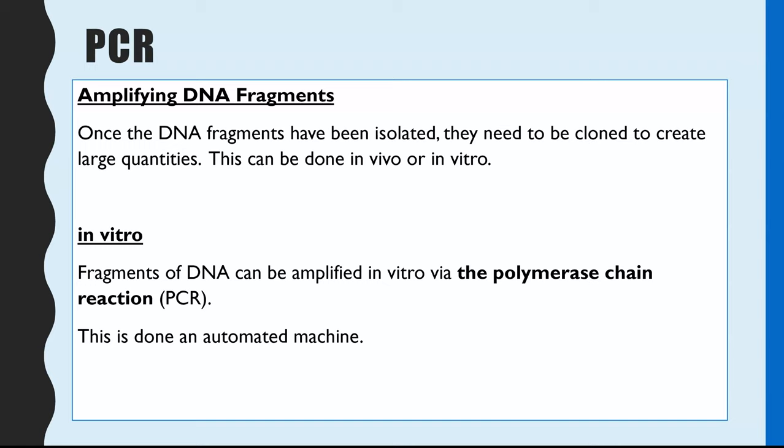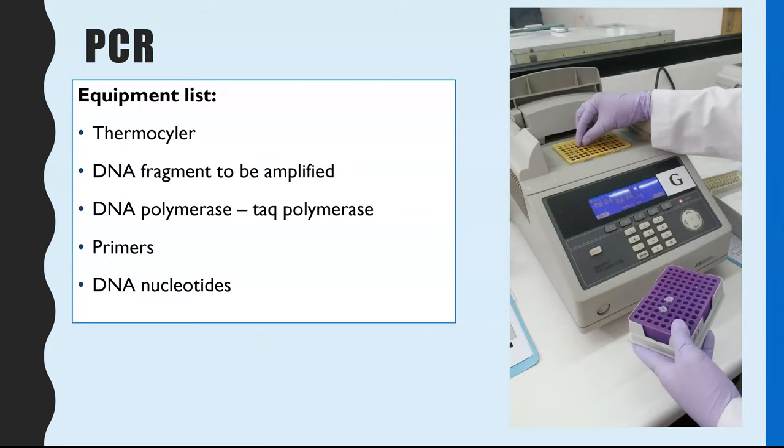But we need to see what's actually happening inside of that machine. So your equipment list, first of all, you need this machine. And the machine, which we can see here on the right, is called a thermocycler. The reason being, the main idea behind PCR is changing of temperatures, which we'll have a look at. It's called a cycler because you allow PCR to happen multiple times over and over until you've got huge quantities of DNA. So we need our thermocycler.